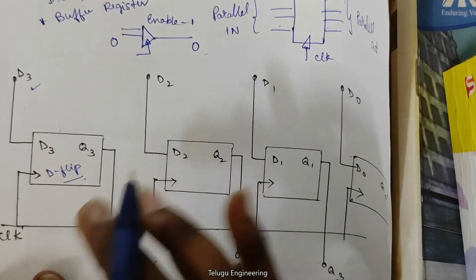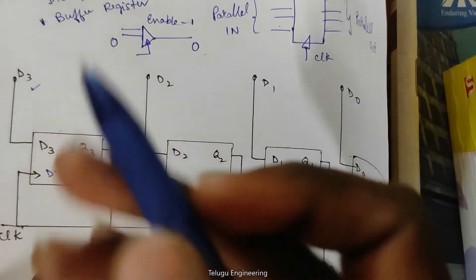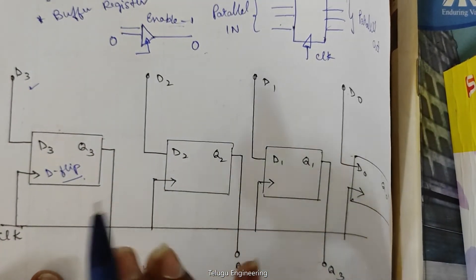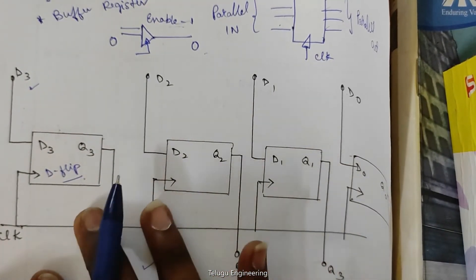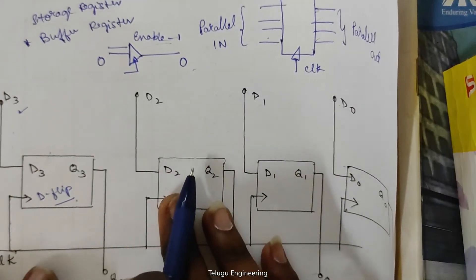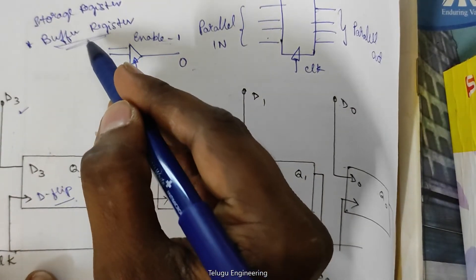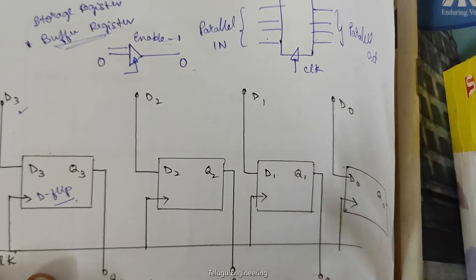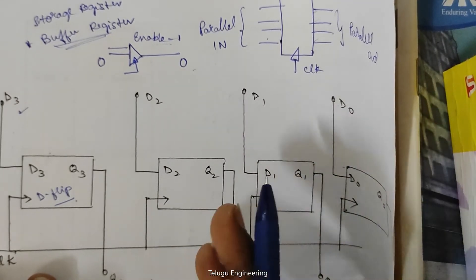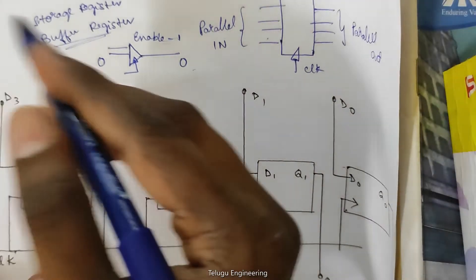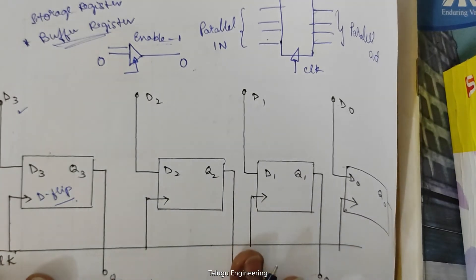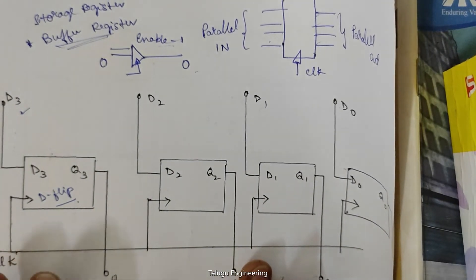If enable is 0, you won't get this kind of output. When enable is 1, whatever the input that you give, the same output will be displayed. We call this a storage register and also a buffer register. A buffer is one where whatever the input, the same output is displayed. That is why we call it a buffer register. This is all about the entire operation of parallel in, parallel out.